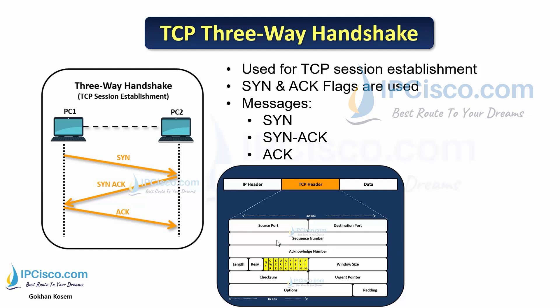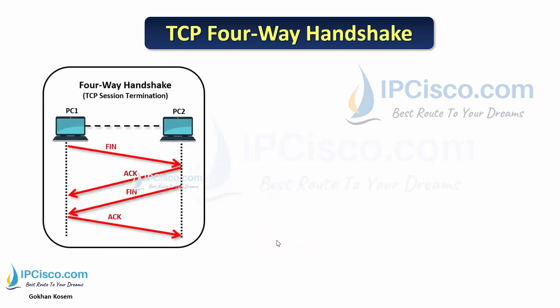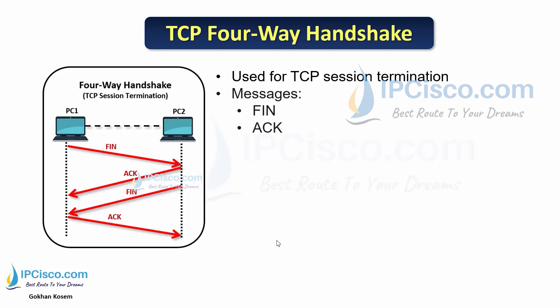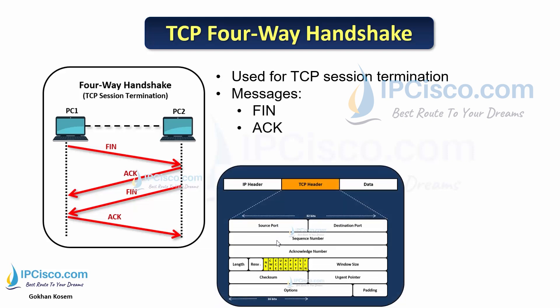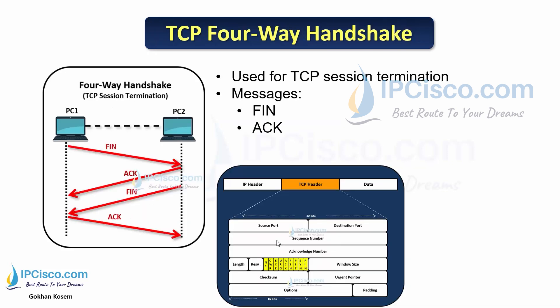Once the session is established, we send data with TCP. When we need to close the session, the TCP four-way handshake is used. In the TCP four-way handshake, we use FIN and ACK flags. One side sends a FIN message to say it would like to close the session, the other side accepts with an ACK message, and it also sends a FIN and receives an ACK message to close the session.